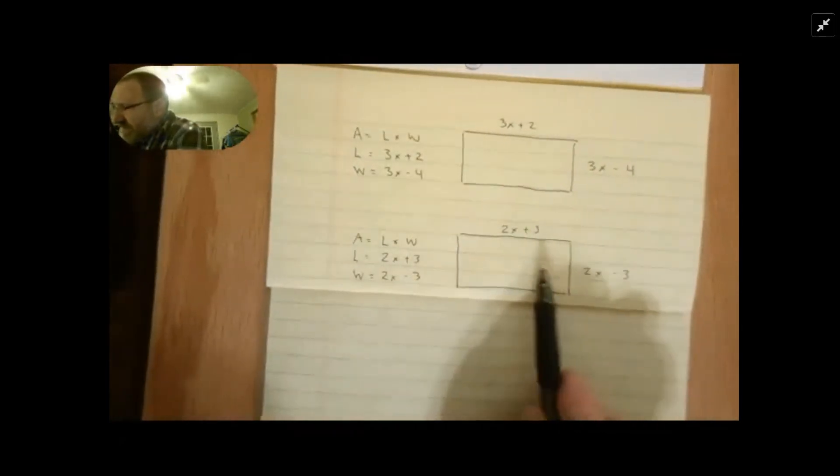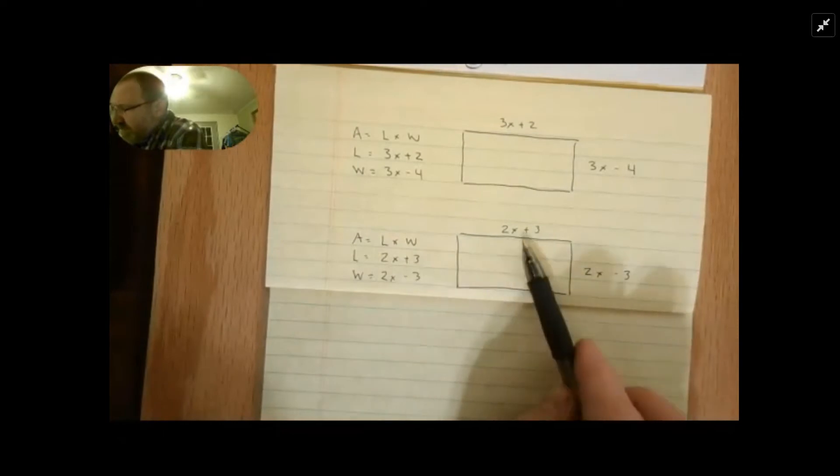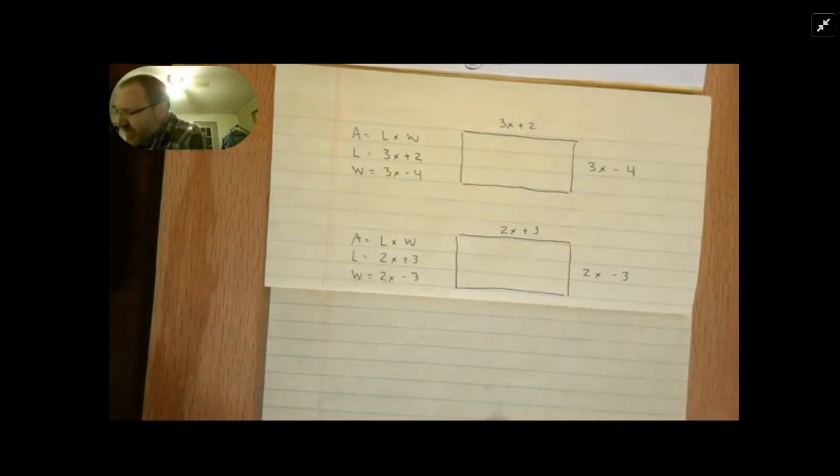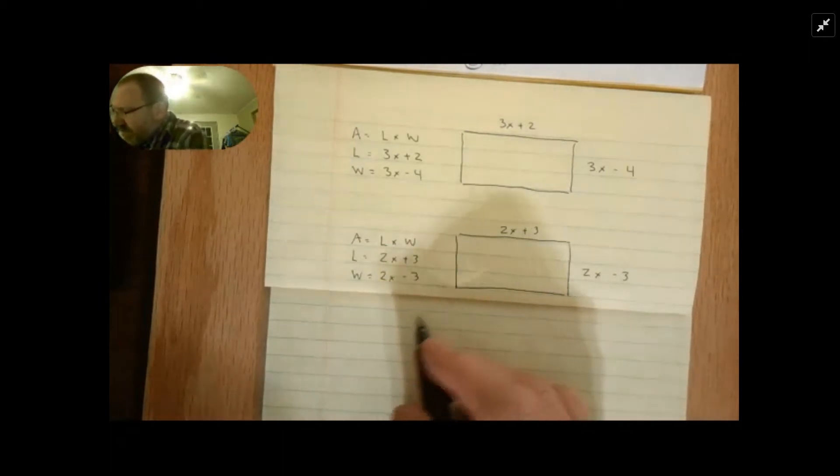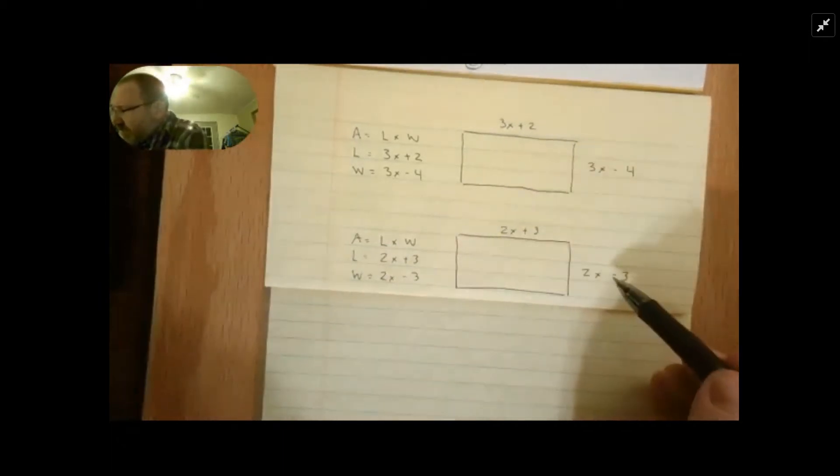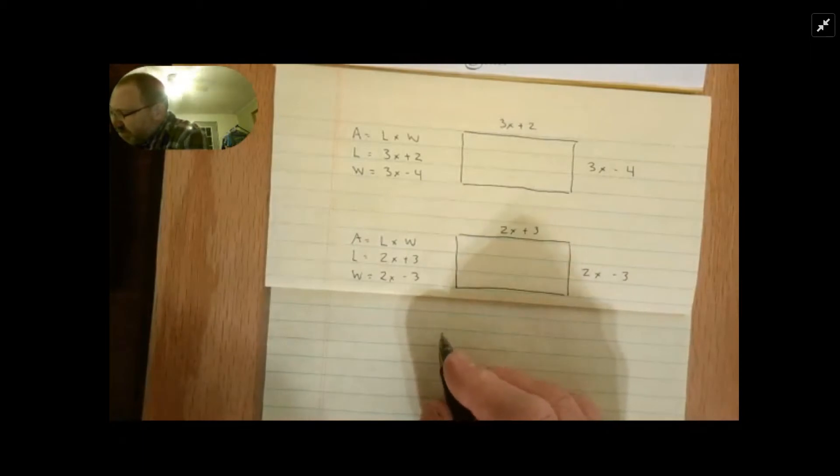I've created a similar rectangle. I've simply made the length 2x plus 3 and the width 2x minus 3. The reason I'm doing that here is because I want to realize that these are both binomials and I can solve this problem length times width by simply using what we call the FOIL method.